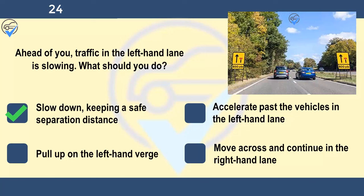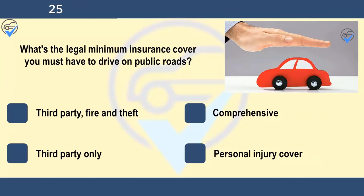What's the legal minimum insurance cover you must have to drive on public roads? Third party fire and theft, comprehensive, third party only, or personal injury cover. The minimum insurance required by law is third party cover. This covers your liability to others involved in a collision but not damage to your vehicle. Basic third party insurance also won't cover theft or fire damage. Ask your insurance company for advice on the best cover for you and make sure that you read the policy carefully.